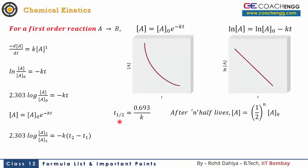The half-life T½ for a first order reaction is 0.693/k. Notice that the half-life does not depend on the initial concentration — it is constant for first order reactions. This means that at any moment, whatever concentration you have, after one half-life it will be halved again. After n half-lives, the remaining concentration is (1/2)^n × A₀.